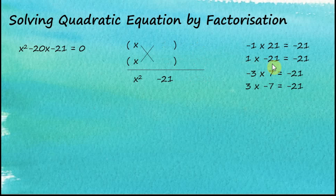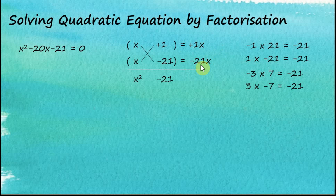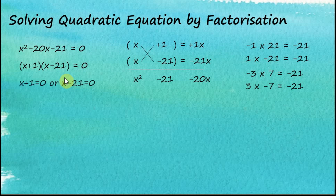Let's try the other pair: positive 1 and negative 21. Putting positive 1 and negative 21 in the brackets, the product is negative 21. Cross multiplications give x times positive 1 equals positive 1x, and x times negative 21 equals negative 21x. The sum is negative 20x — exactly what we want. So we rewrite the equation as x plus 1 times x minus 21 equals zero, giving x equals negative 1 or x equals 21.